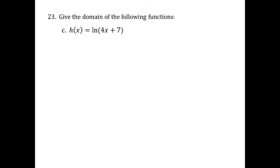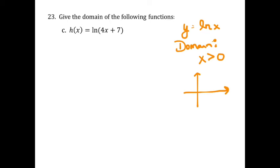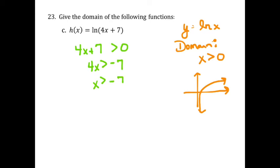This time we've got a natural log function. Let's think back about our parent function: y equals natural log of x. The domain for that function is x greater than 0 — notice that's not greater than or equal to 0. The natural log function has a vertical asymptote at x equals 0, so it can't equal 0; it has to be greater than 0. That means we take the expression inside the natural log, 4x plus 7, and say it must be greater than 0. Solving: 4x greater than negative 7, so x greater than negative 7 over 4.